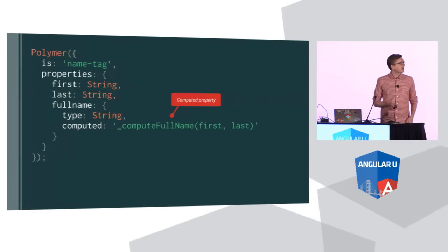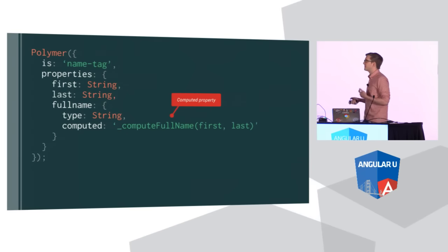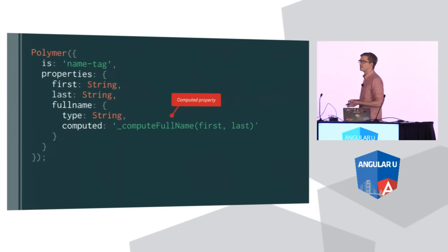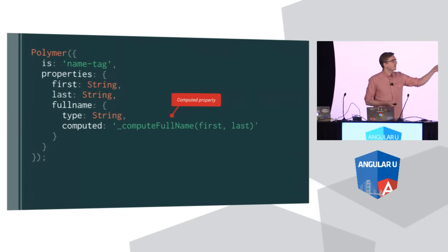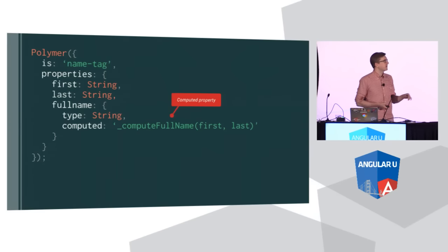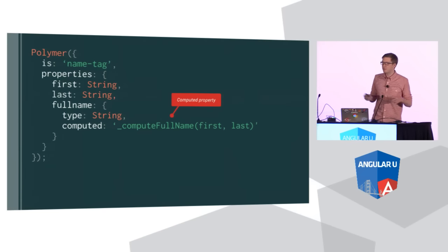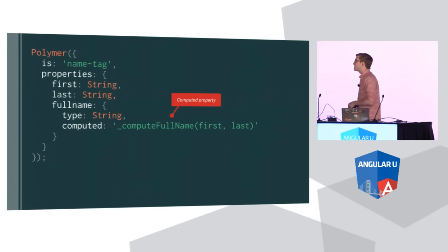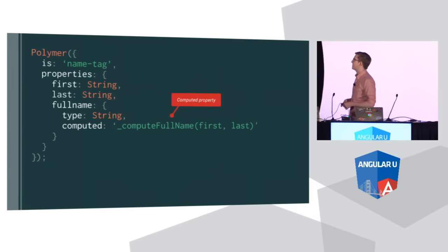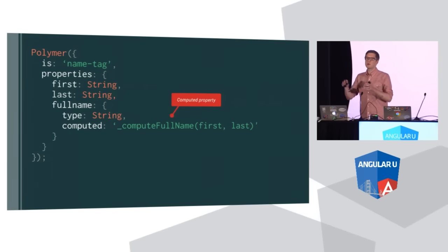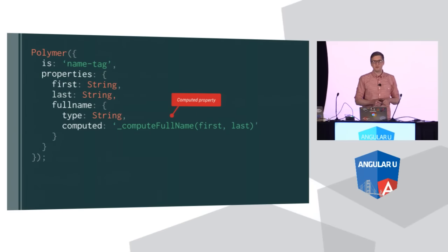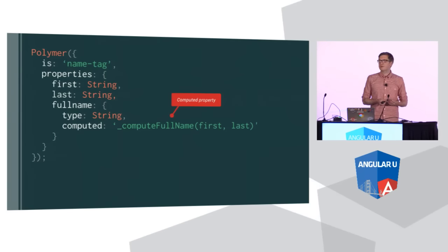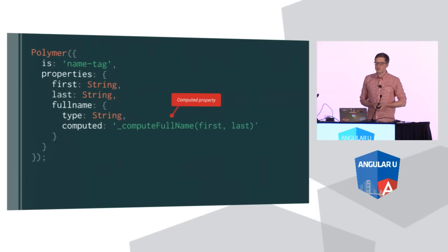We also hope this makes it easier to interoperate with other data binding systems. If you have some other library or framework that does two-way data binding, it can listen for these automatic change events to know that it needs to update its binding. The last thing you can do, which is really neat, are computed properties. If I want to compute first and last name together into a full name property, I write out a little function as a string. Polymer is going to break that string apart, look at those two arguments, and find the properties it needs to observe — a really convenient way to set up observable properties.